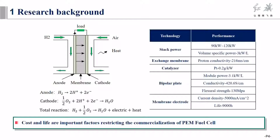At present, PEM fuel cell has made breakthrough progress in energy efficiency, power density, low temperature start-up, and other performance indicators. However, the current mass production cost of PEM fuel cell system is $49 per kilowatt and the service life is generally 2,500 hours. There is still a gap between the commercial cost index.